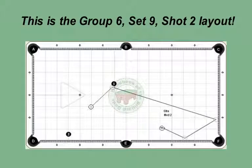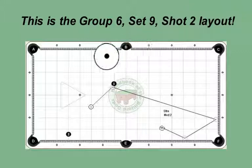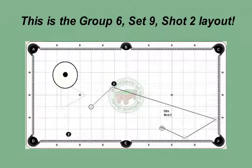This is the Group 6, Set 9, Shot 2 layout. On this shot, you have to add more speed to the ball. The ball has to travel to the top rail and come back down. To keep the cue ball on the left side of the table, use stun with a medium 2 speed.